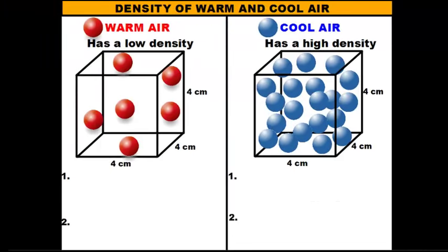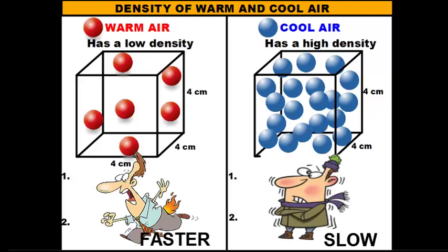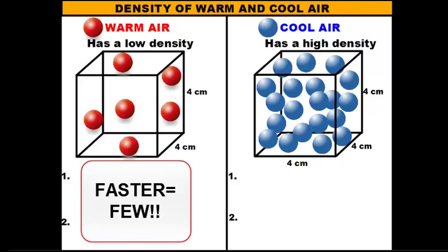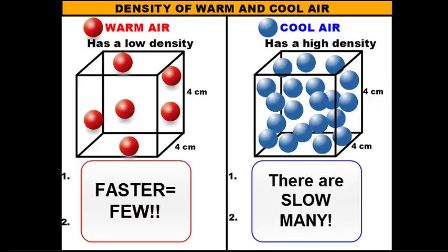As we're looking at our cubes of air here, you'll notice again that the warm air has much fewer molecules in it than cool air does. And the reason why has to do with the speed of the molecules. Warm air molecules move faster than cool air molecules. So since warm air is moving faster, there are going to be fewer of them in a given space, as opposed to cool air where they're moving much more slowly so you can pack more of them in a given space.